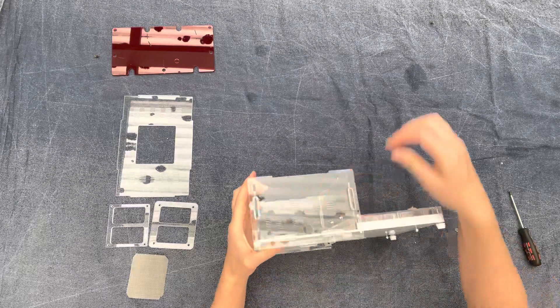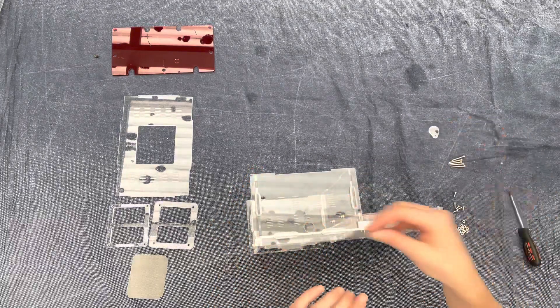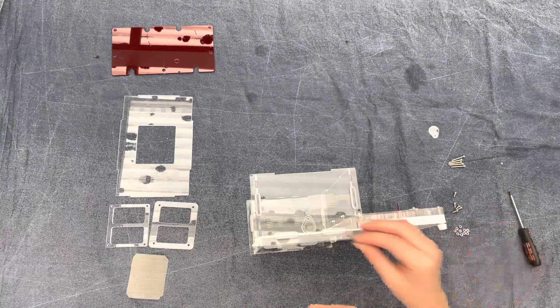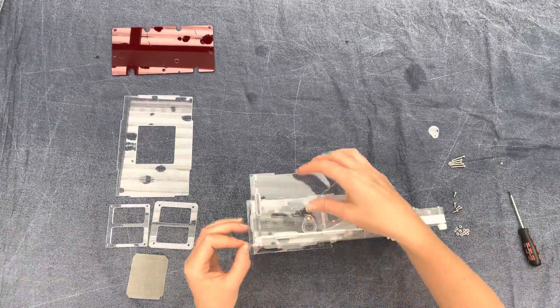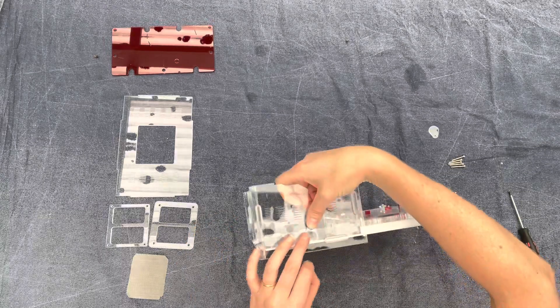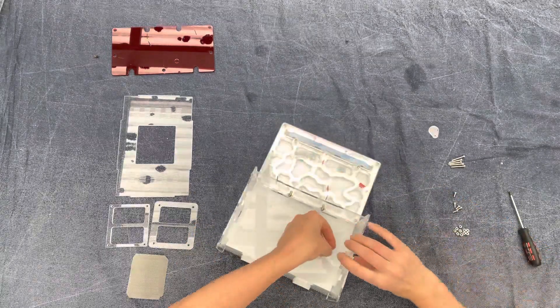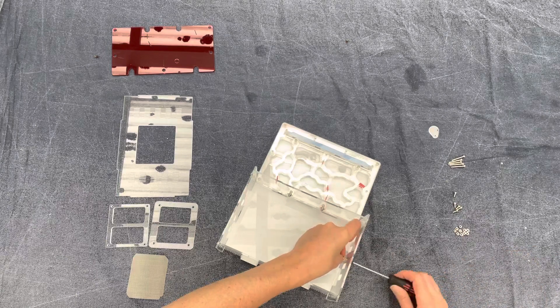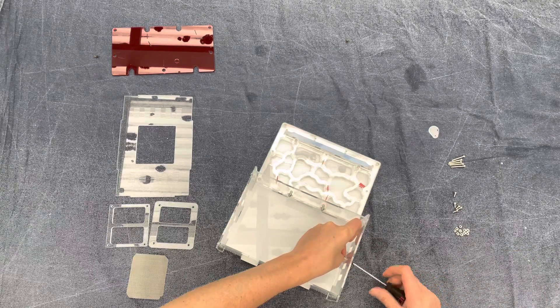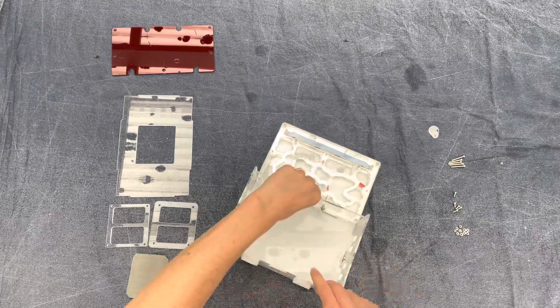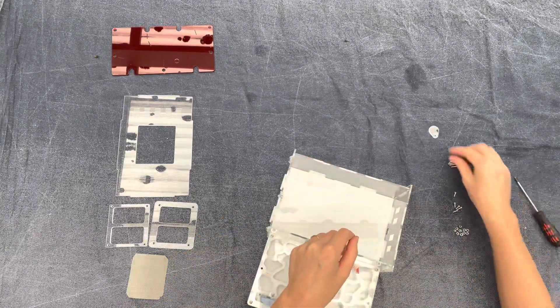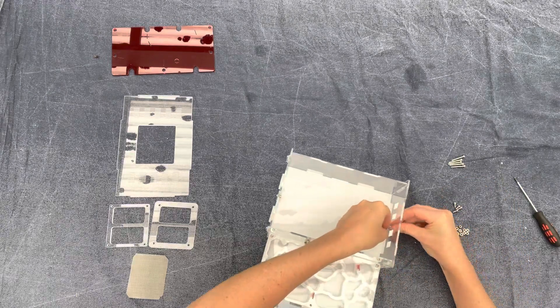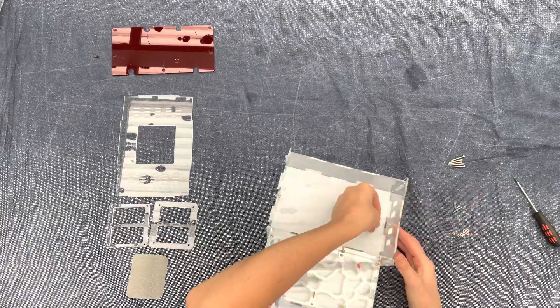Next we'll cover these expansion holes. These are useful if your ants do outgrow this nest. You can simply connect another nest with a tube. So we use these little acrylic flaps, a short bolt and a nut, just to cover these holes until you're ready to use them. There's one on each side.